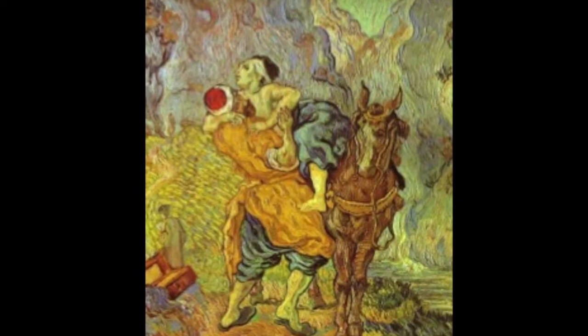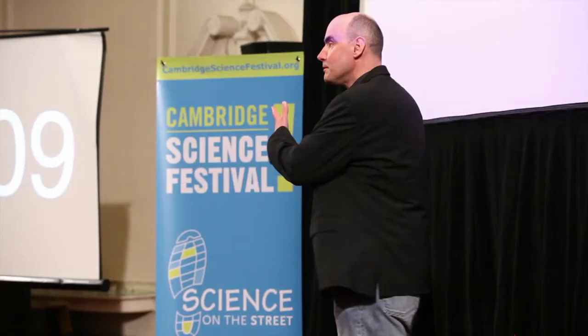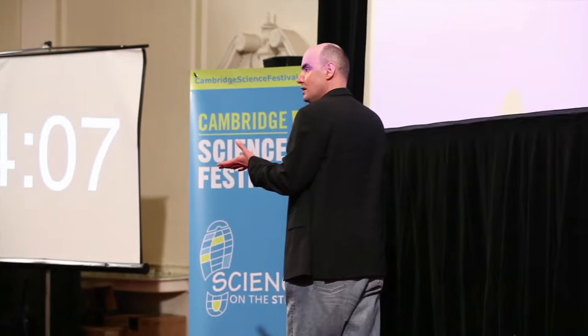So cooperation is the following idea. There's an interaction between two individuals — cells or people — and there's a donor and a recipient. The donor pays a cost, the recipient has a benefit. And the question is why should you do this? Because the other person is a competitor in the struggle of natural selection.